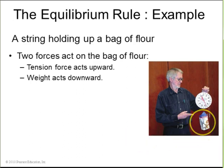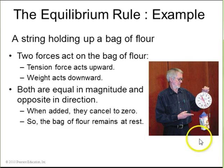Another example, you have a bag of flour. Two forces are being applied to this bag of flour. Tension is pulling it upwards in the scale, reading how much tension. And weight is acting downward. That's the gravity force from the earth. If the bag of flour doesn't move, that means that the weight and the tension force must be canceling out. So when they add, they cancel to zero. So the net force on the flour is zero, and the bag of flour remains at rest.